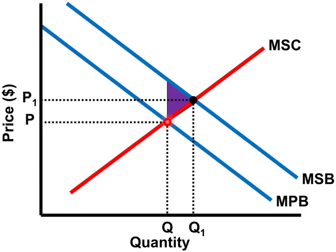This market is underproducing this good, and that's why we have this deadweight loss, the area of the purple triangle.